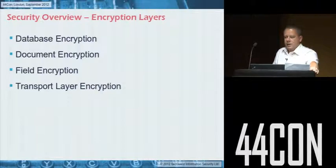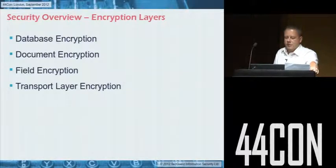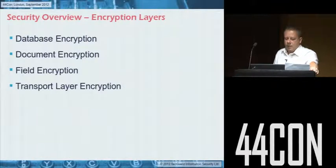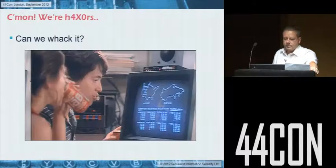There are various layers of encryption, which is what makes Domino attractive to companies that want to keep their data secure. You've got database encryption with three or four different levels. Document encryption requires all fields in the document to be marked as encrypted. Field encryption lets you assign an encryption key to a particular field — so if you're storing passwords in a database but still want others to access it without seeing the passwords, you can import an encryption key into admin ID files only. Transport layer encryption uses your public key to encrypt comms with the Domino server. But we're hackers — can we whack it? And the answer is yes, we can.